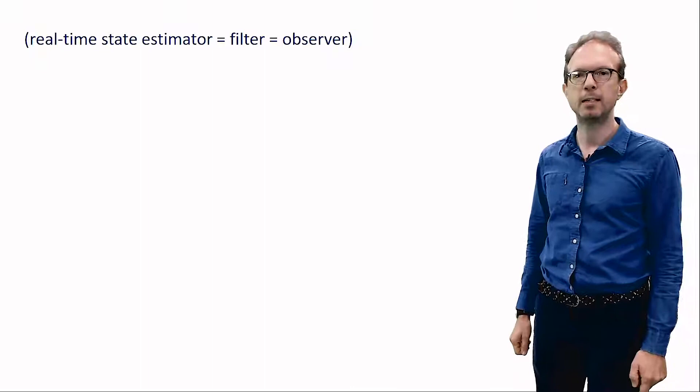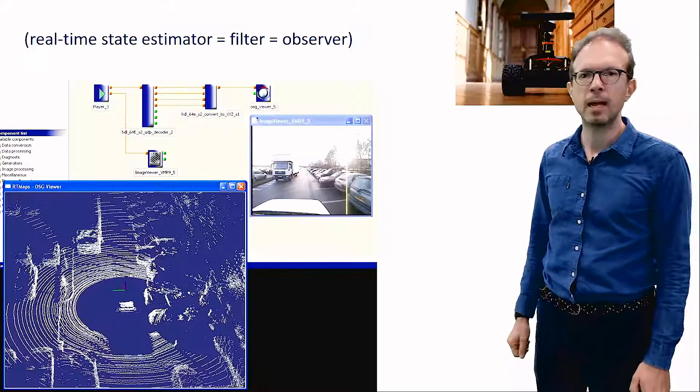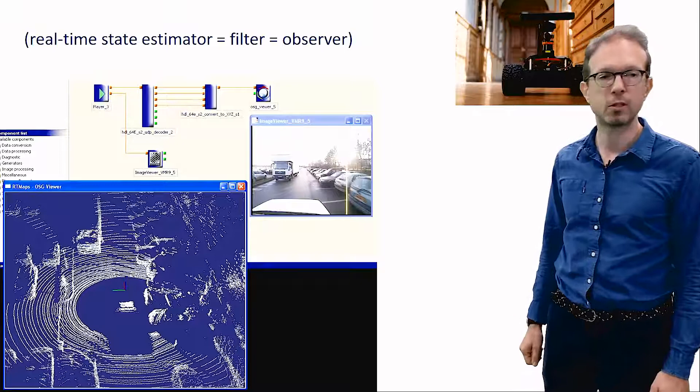As you can imagine, accurate state estimation is a critical part of autonomous robots or self-driving cars. To start things off, I'd like to begin with a simple example from the field of mobile robotics.